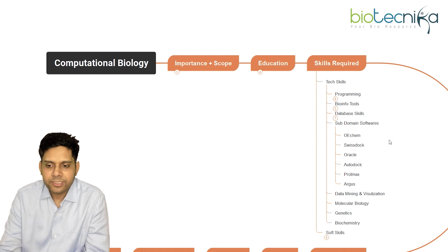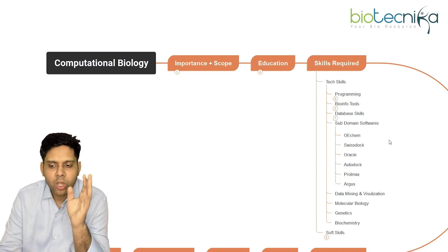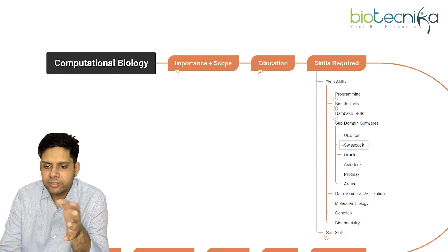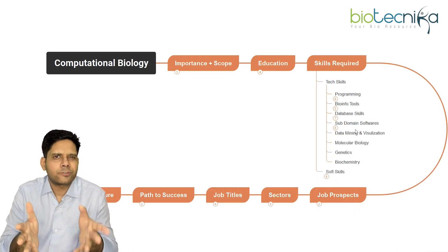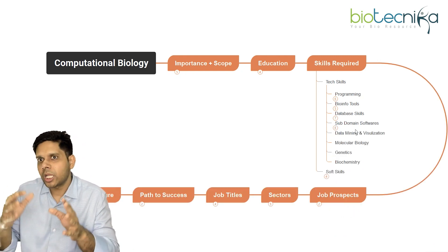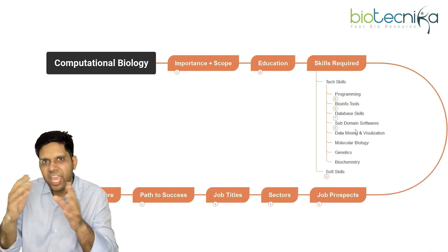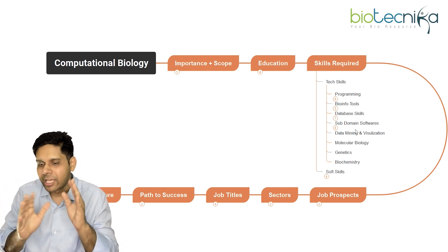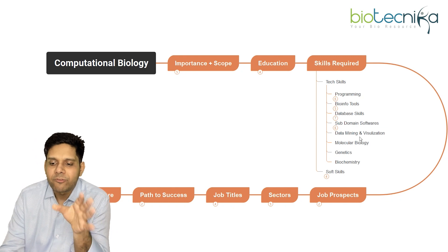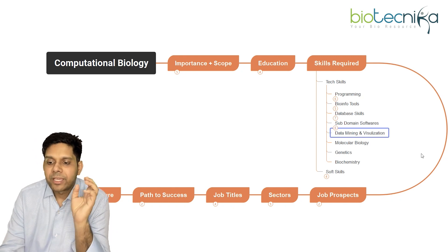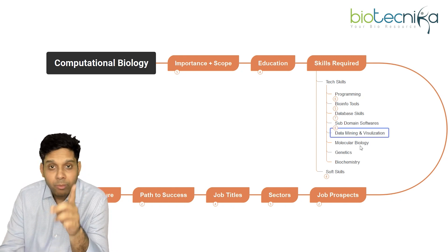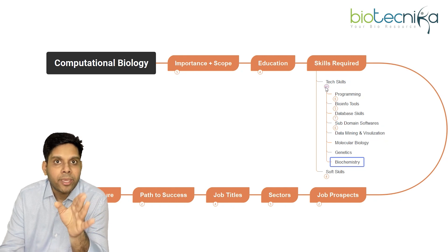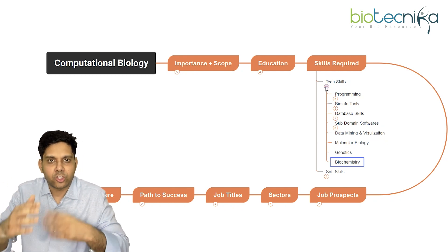Then there are subdomain softwares like OE Chem, SwissDock, Oracle, AutoDock, Protmax, and Argus. These softwares are required because you're going to study the behavior of biological molecules at the physics and atomic level, so they'll be very handy. Additionally, you need data mining and visualization, molecular biology, genetics, and biochemistry skills. These are the technical skills you'll need to develop over the next five to seven years.